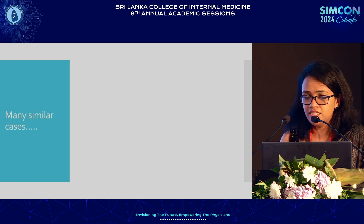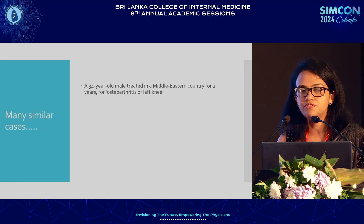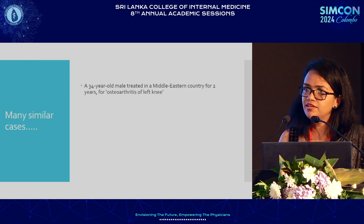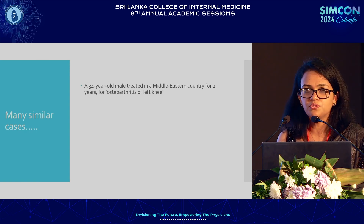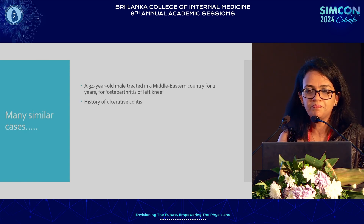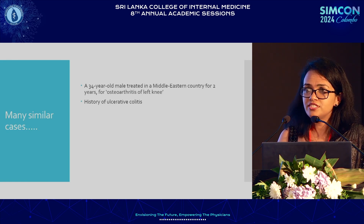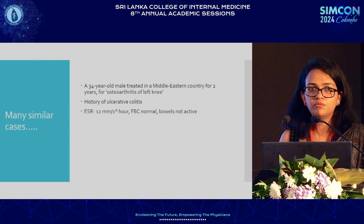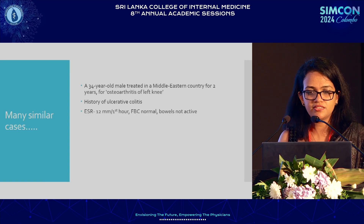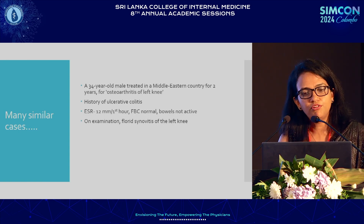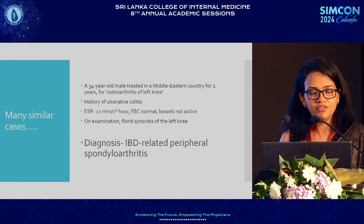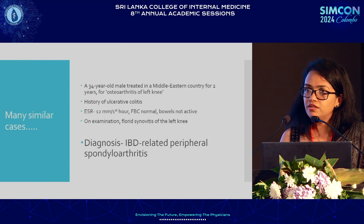There have been many similar cases. To summarize a few: there was a 34-year-old male working at a shipyard in a Middle Eastern country, heavy work, treated for two years as osteoarthritis of the left knee. But he was a slim-built person, 34 years old — why would he develop osteoarthritis only in one knee? The inflammatory markers were normal, full blood count was normal, so everybody assumed osteoarthritis. On examination, there was florid synovitis of the affected left knee. The diagnosis was IBD-related peripheral spondyloarthritis. With treatment, he markedly improved and went back to the country on methotrexate.